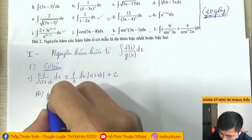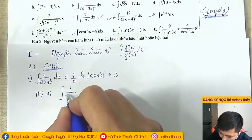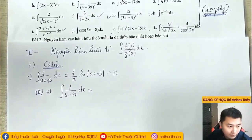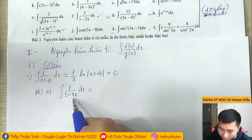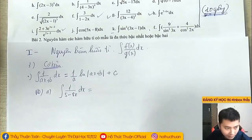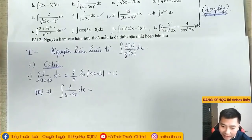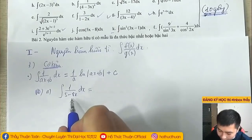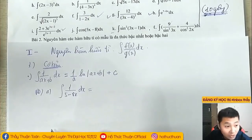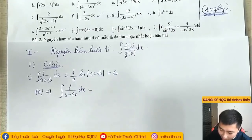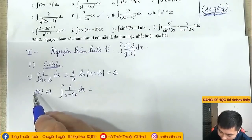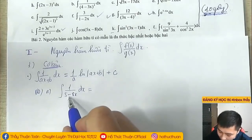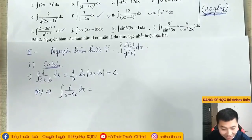Thầy lấy ví dụ: tìm nguyên hàm của 1/(5+8x) dx. Đây là dạng cơ bản thứ nhất. Bản chất nó là công thức, các em không cần phải đặt hay làm bất cứ việc gì khác. Chỉ cần nhớ công thức sau đó ốp vào thôi. Trong công thức này chỉ cần nhớ A bằng bao nhiêu. A được gọi là hệ số đứng trước x. Vậy trong bài này A bằng 8 (không phải 5). Đừng bao giờ bảo A bằng 5 nhé.